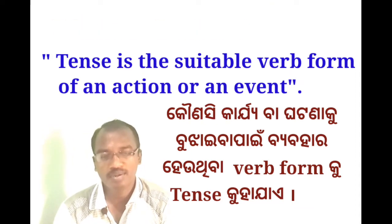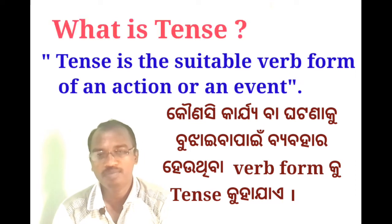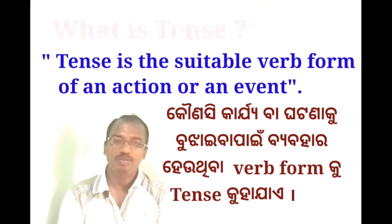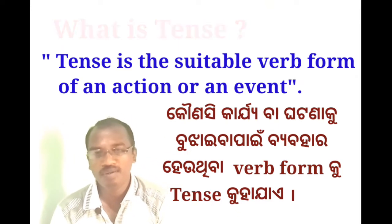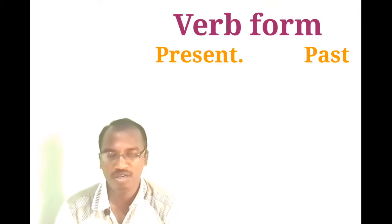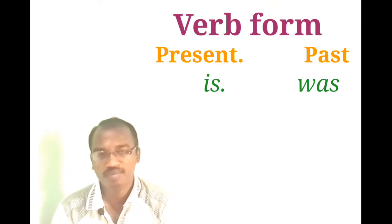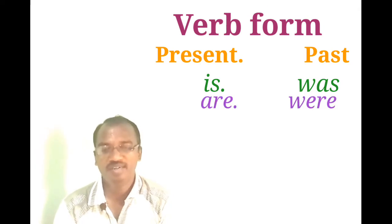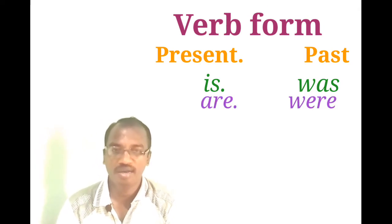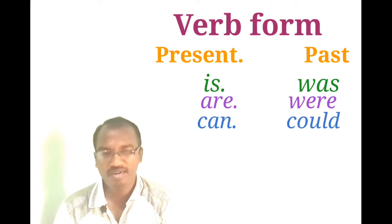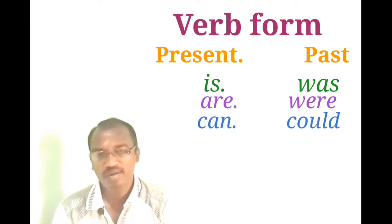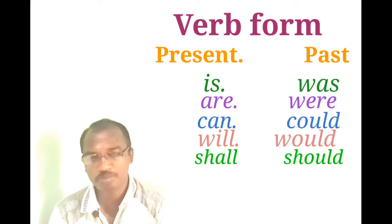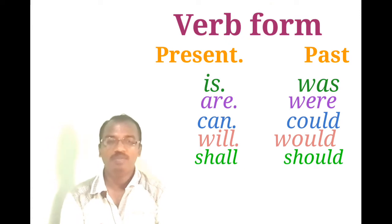If the action is in the present, we use the present verb form; if it is in the past, we use the past verb form. For example: 'is' is the present tense verb form, and 'was' is the past tense form. Similarly, 'can' is present tense and 'could' is past tense; 'will' is present tense and 'would' is past tense; 'shall' is present tense and 'should' is past tense.